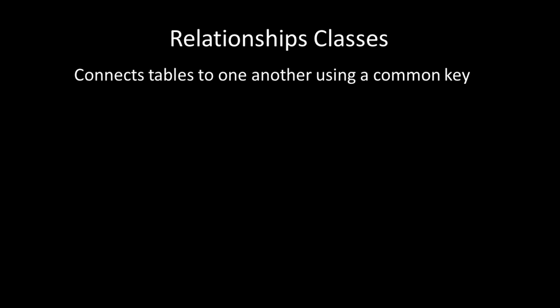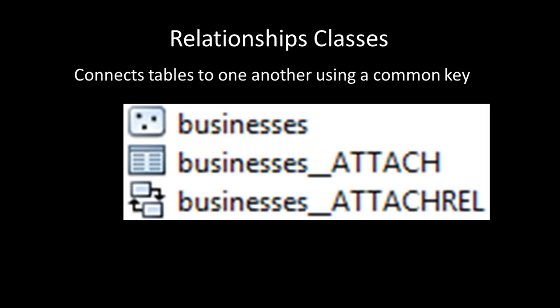If you are not familiar with these ideas, this figure shows two tables that are related to one another. The point feature class on the top contains the locations of businesses in a refugee camp. The standard table below the point feature class contains pictures of businesses from the refugee camp. The third item at the bottom of the figure is the relationship class, which tells the GIS software which record from the point feature class is related to records of pictures stored in the standard table.